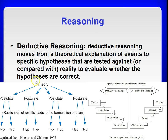Deductive reasoning moves from a theoretical explanation of events to specific hypotheses that are tested against or compared with reality to evaluate whether the hypotheses are correct. Within any given study, both are useful. At the beginning of a study, the researcher deduces hypotheses from relevant theories and concepts and induces hypotheses from relevant findings in other research.